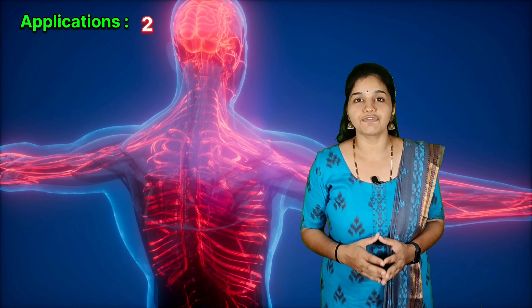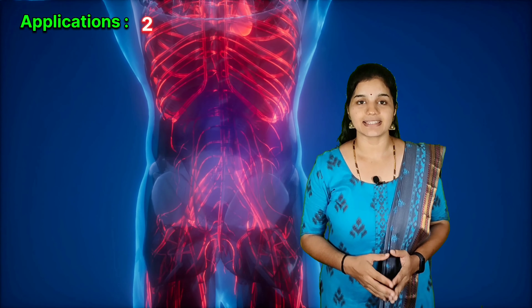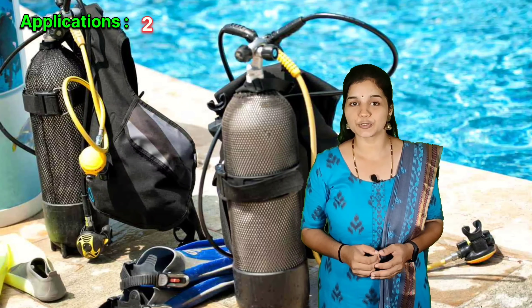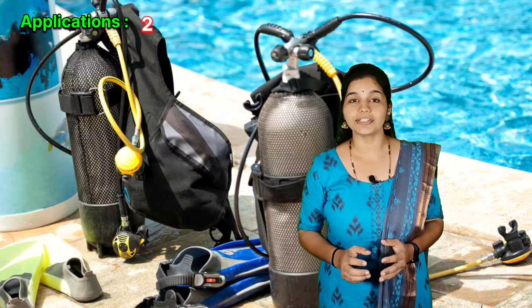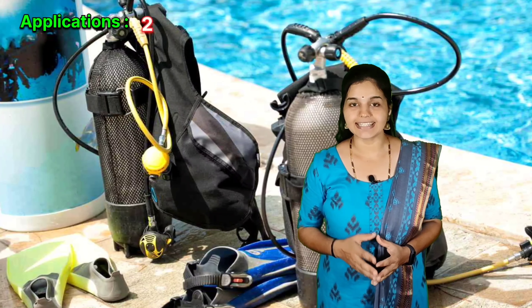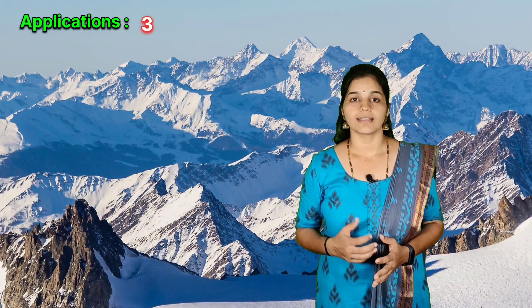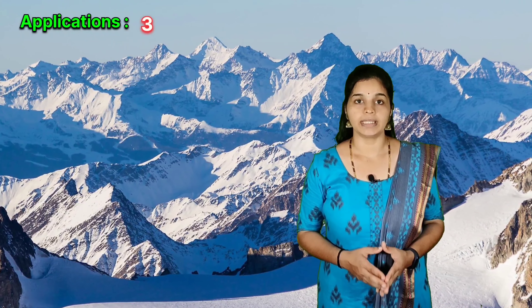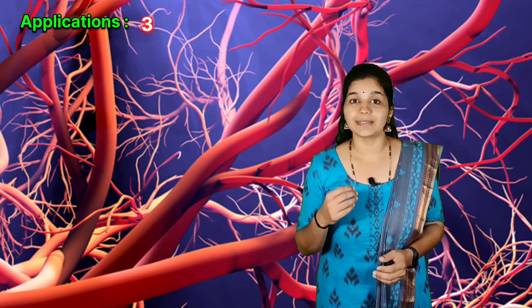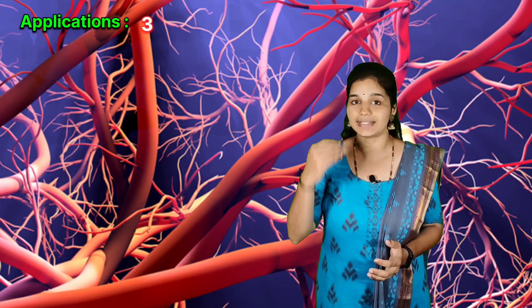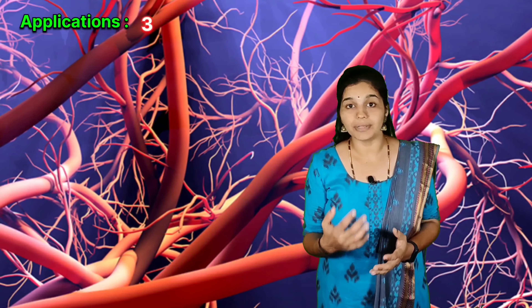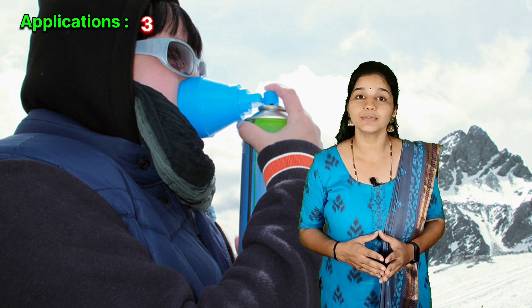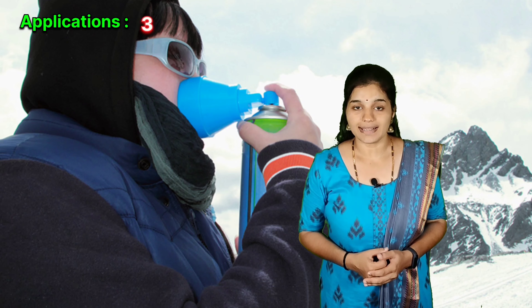To avoid bends and the toxic effect of high concentrations of nitrogen in the blood, the tanks used by scuba divers are filled with air diluted with helium, which decreases the concentration of nitrogen. At high altitudes, the partial pressure of oxygen is less than at ground level. As a result, the concentration of oxygen in the blood and tissues of people living at high altitudes or mountain climbers is very low. Low blood oxygen causes climbers to become weak and unable to think clearly — this condition is called anoxia.